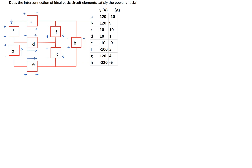The aim of this problem is to check whether this given interconnection of ideal basic circuit elements satisfies the power check. There are eight ideal basic circuit elements here. The reference direction of the current and the reference voltage drop polarity is indicated for each circuit element. Also the value of the voltage drop and the currents is shown in this table. The main conceptual point in solving this problem is to be able to apply the passive sign convention to the power calculations.